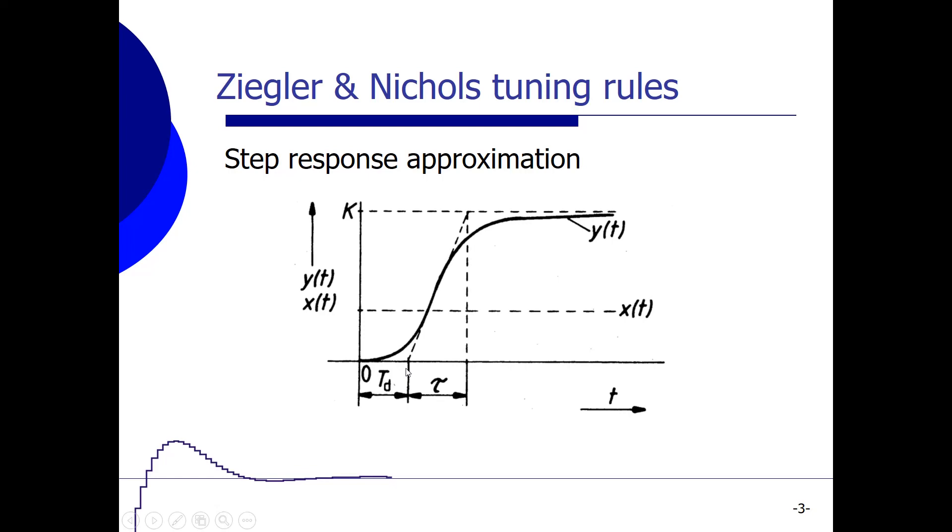So we can model our system by having a first order transfer function, and we add to that first order transfer function the transfer function of a delay. The delay time tau_d can be calculated using the intersection point of the tangent of y over here, this point, minus the starting point of our input step. And we can calculate the tau out of this signal by taking that same tangent over here and take the difference between the intersection point with the end value of y and the starting point over here. And then we have tau and the delay time tau_d.